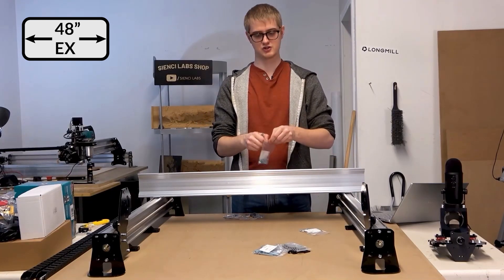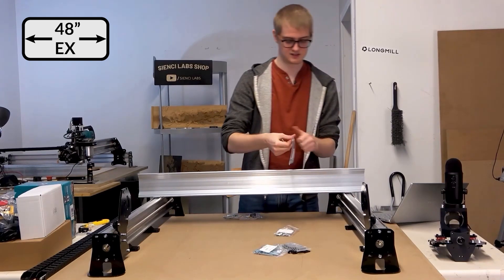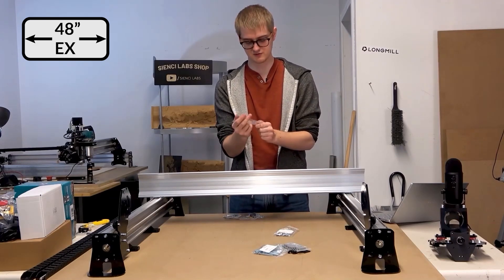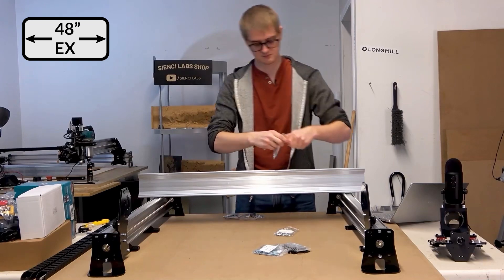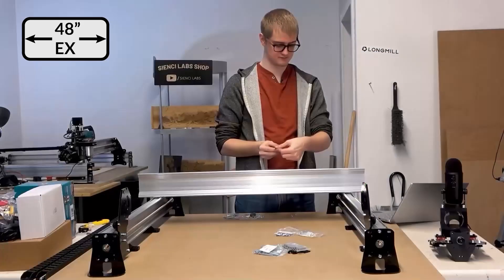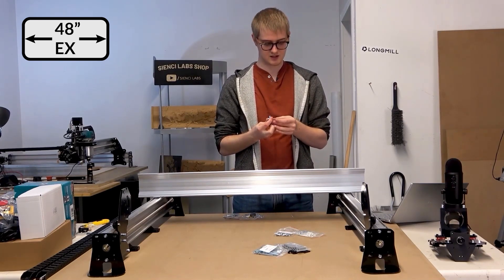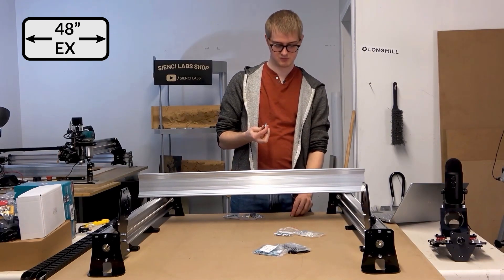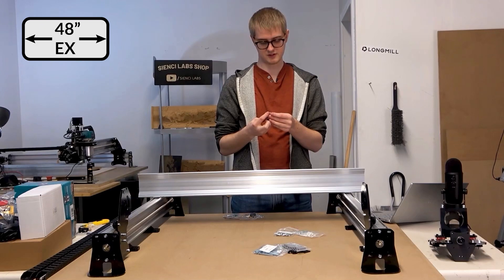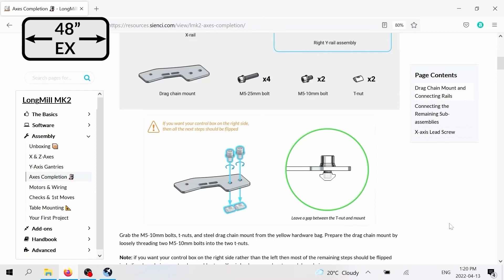I'm gonna grab my two short M5 bolts that we use for this step, and the T-nuts, two of those as well. And exactly as is pictured in the manual, we're gonna be putting them inside the mount, the bolts coming in from the top, and the T-nuts from the underside. And you'll just rotate this on once or twice, because you need to leave a gap on the T-nuts. And make sure the T-nuts are facing the right way, as is shown in the close-up of the diagram.